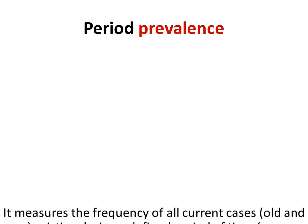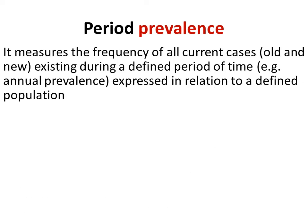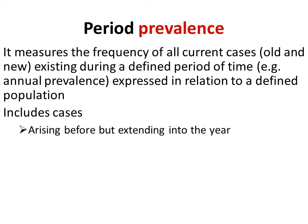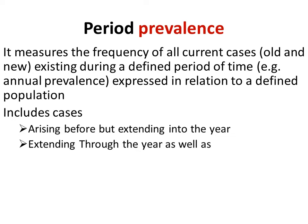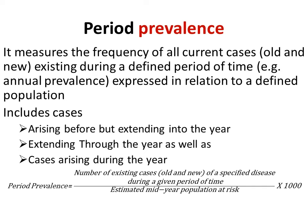Period prevalence counts all current cases existing at any time during a defined period in relation to the defined population at the mid-interval. It includes cases that arose before the time period but extended into the year, cases that extended through the year to the next year, and cases that started during the given year. The formula is: number of existing cases during the time period, divided by the mid-interval population at risk, multiplied by 1000.